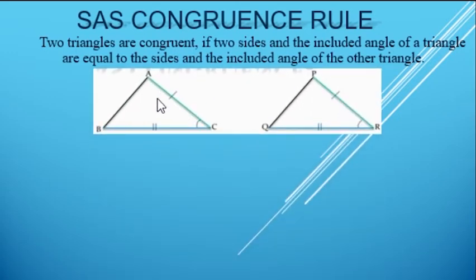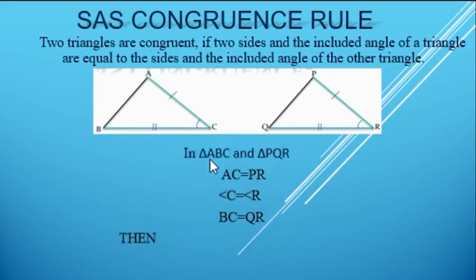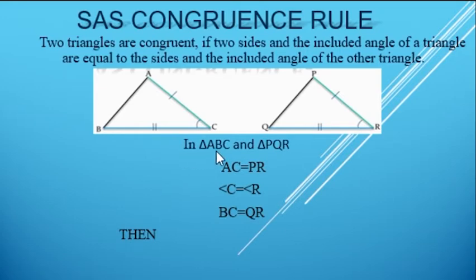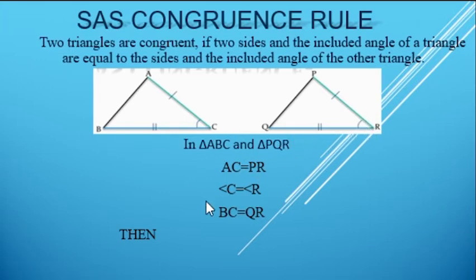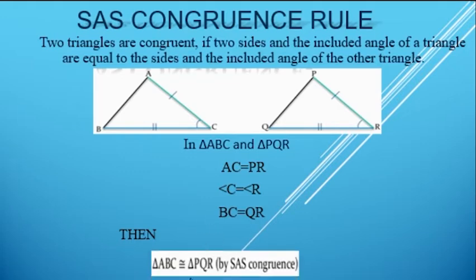there are 2 triangles ABC and PQR. Let us see how Side Angle Side will be used. In triangle ABC and triangle PQR, we have given AC equals to PR, and angle C equals to angle R, and BC equals to QR. Then we can say the 2 triangles are congruent by Side Angle Side congruence rule.